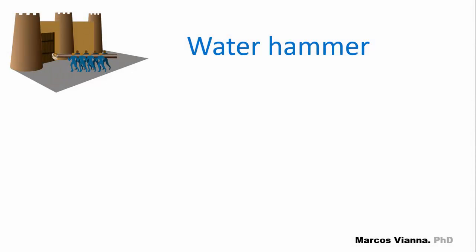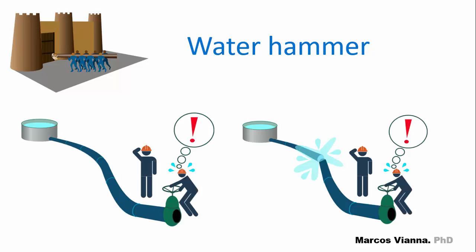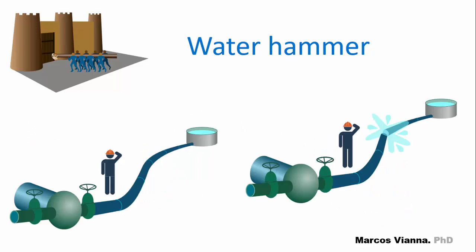In our previous video, we began studying the water hammer phenomenon, which occurs in closed pipes during transient conditions. As we saw, it can happen during the closure of a valve when the closure time is too small, and in pumped lines when a power failure occurs.